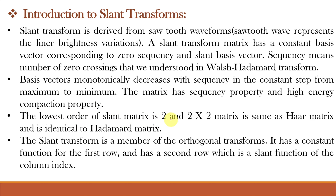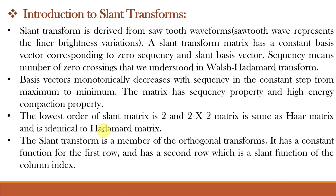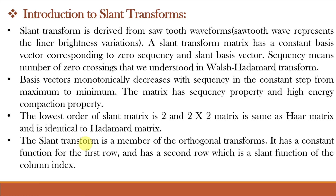The lowest order of slant matrix is 2, and a 2×2 slant matrix is the same as the Haar matrix, which we studied in video lecture number 60. The slant matrix is 1/√2 × [1 1; 1 −1], which is also identical to the Hadamard matrix from video lecture number 76 — just without the 1/√2 normalization. From this we conclude that the slant matrix is also a member of orthogonal transforms, like KL transform, Walsh-Hadamard transform, and Haar transform.